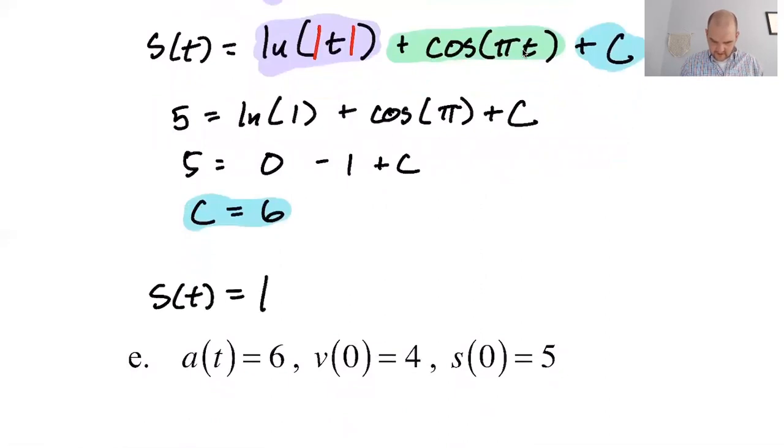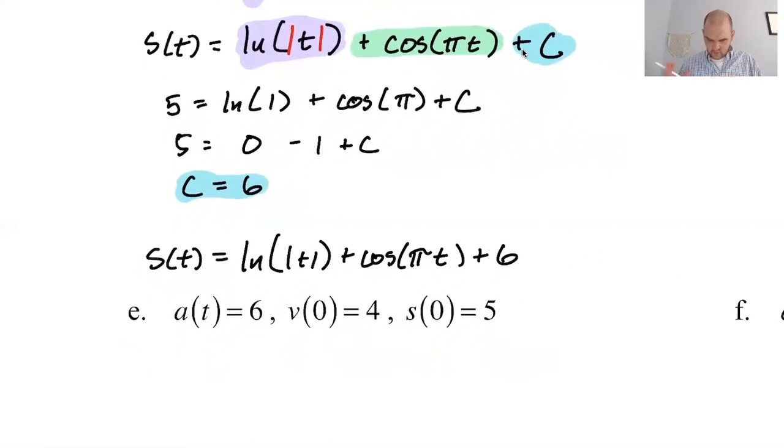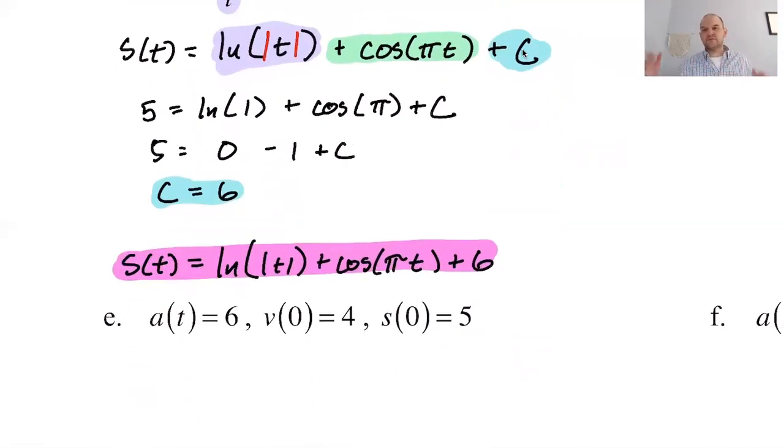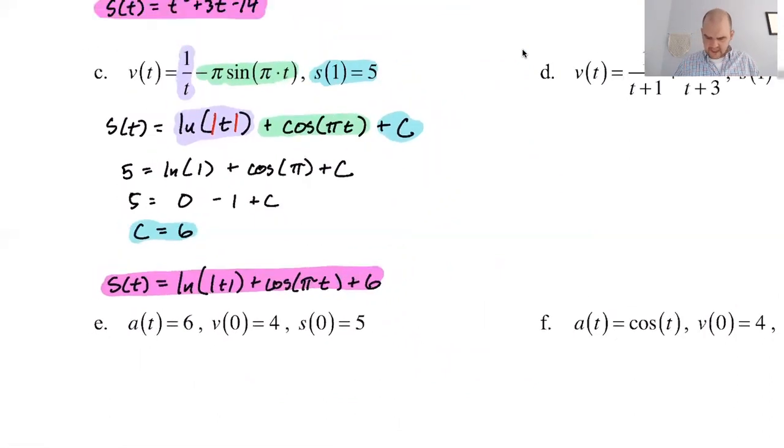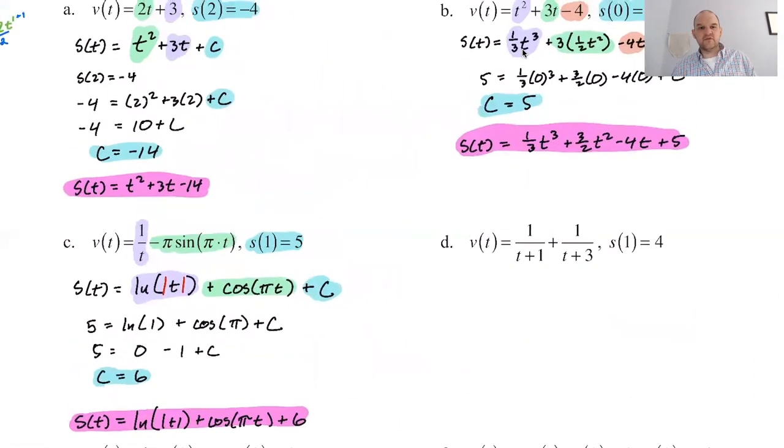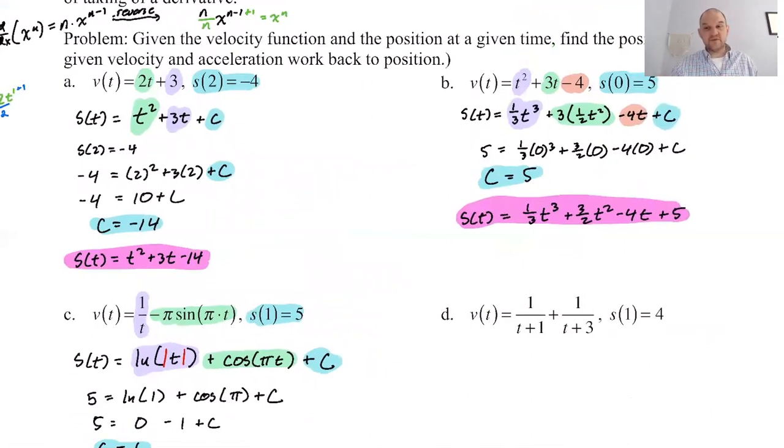So s of t is the natural log of absolute value. Oh, that's an x. It's hard. You write x so often that it's difficult to get away from writing it. Pi t and then plus six. So this is a function that has a derivative that's one over t and then minus pi sine of pi t. And then also if we plug in whatever, if we plug in one, we get five. It's perfect-ish. I mean, it's good. That's perfect. I don't know. All right. So these are the problems we've done so far. I'm going to come back in the next video, finish this, do a little bit on the calculator. Hopefully that works. So I will see you there.